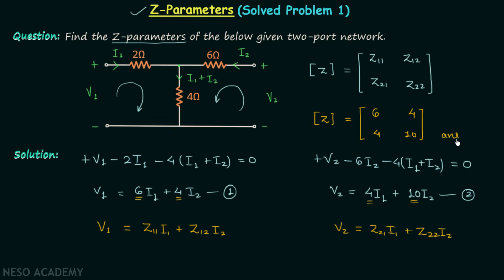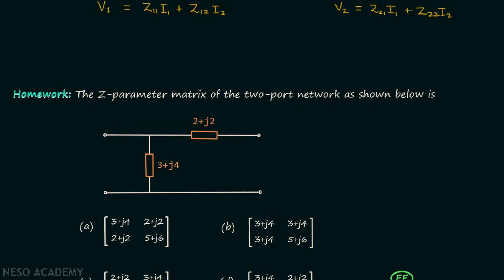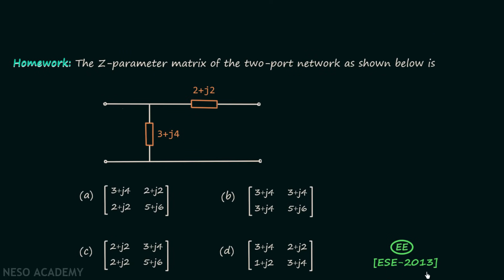So this is our answer. I hope the solution and the steps required to solve the question are clear. Now we will move on to a homework problem taken from ESC 2013 electrical paper. In this problem you are required to find the Z parameter matrix and there are four options given, so try to solve it and post your answer in the comment section.